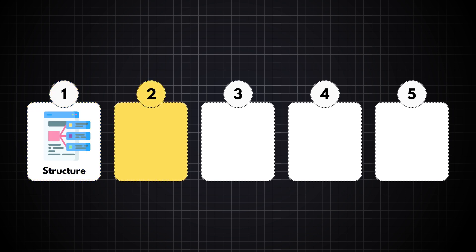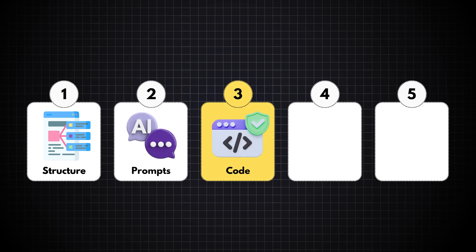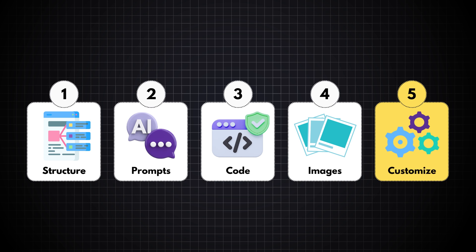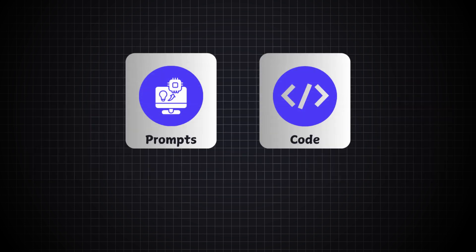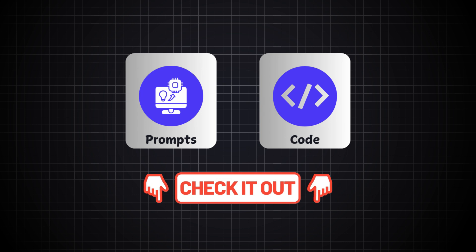In step two, we will write prompts using DeepSeek AI to generate suitable images for our website. In step three, we will generate HTML, CSS, and JavaScript code for each section. In step four, we will copy-paste those codes and add our images to complete the website design. In step five, we will make minor adjustments to customize and improve the website. I will provide all the prompts and codes in the description so you can download them and follow along.